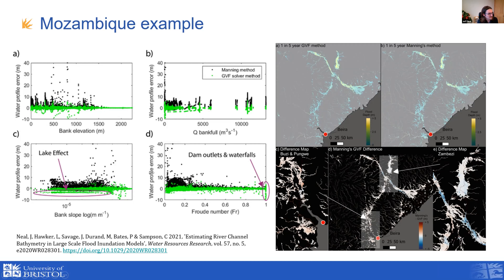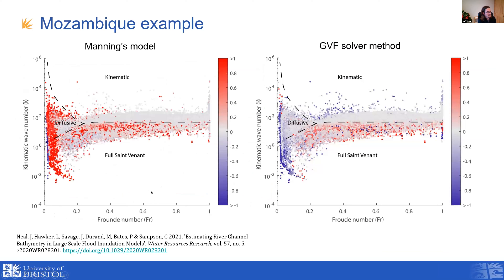Interestingly, the biggest improvements in model accuracy occurred where we had lower Froude numbers, as demonstrated by a plot with Froude number on the x-axis and kinematic wave number on the y-axis. Moving toward the top right of the diagram, you get into reaches where largely the water surface slope matches the bed slope. Moving down into diffusive and full Saint-Venant style channels, we saw the big bias in the Manning's model concentrated in these low-gradient, low-Froude-number, diffusive-type locations. The gradually varied flow solver method showed substantial correction of those errors in low-gradient, low-Froude-number locations.